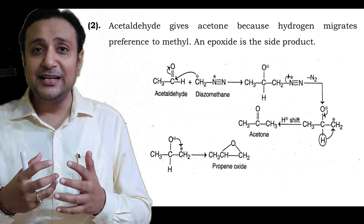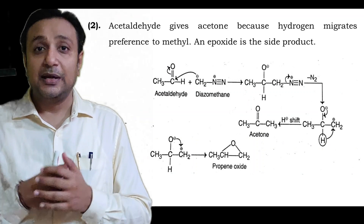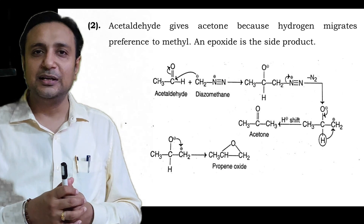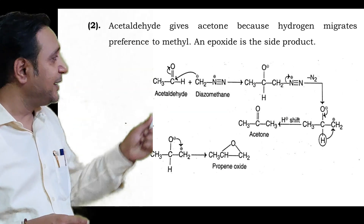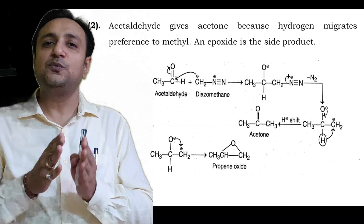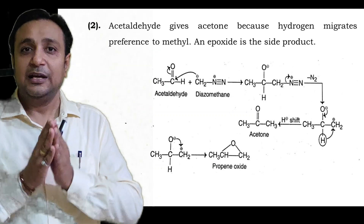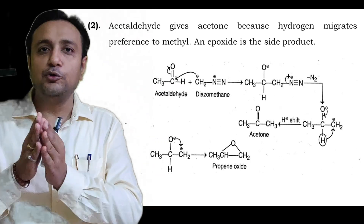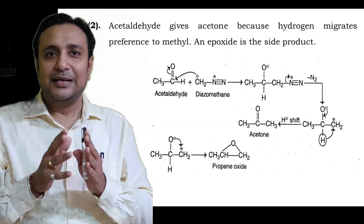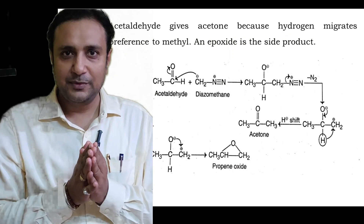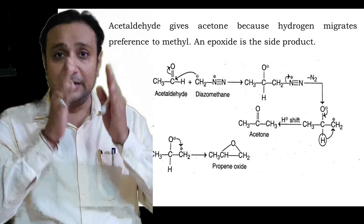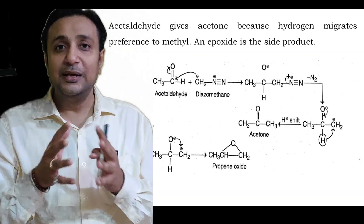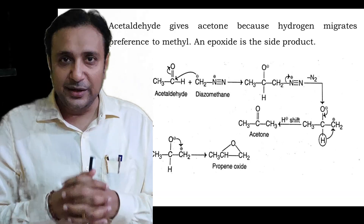The second application, which is the most important, is that using Wolff rearrangement we can also produce an epoxide. For example, when acetaldehyde reacts with alpha-diazo ketone, it forms an intermediate; when this intermediate loses nitrogen gas, it forms a tetrahedral complex which on proton shifting produces acetone along with propene oxide. This completes the Wolff rearrangement — we have discussed its principle, reaction, mechanism, and extensions. I hope you have a better idea of the Wolff rearrangement from this video. Thank you.